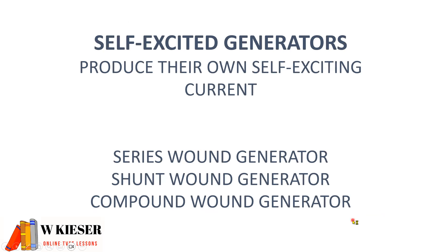There are three types of self-excited generators: the series, shunt, and compound wound generators. They are known for producing their own self-exciting current, hence they are referred to as self-excited generators.